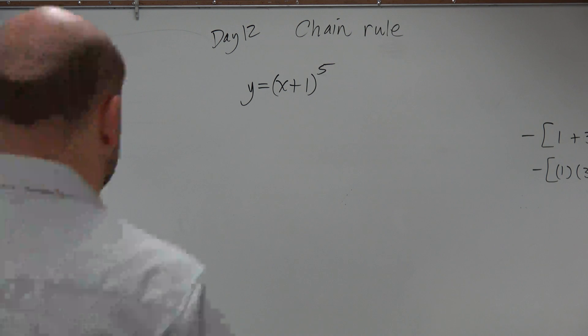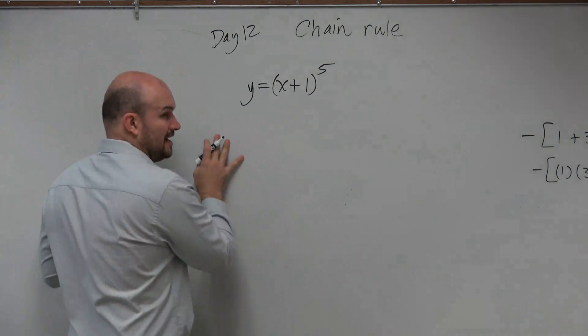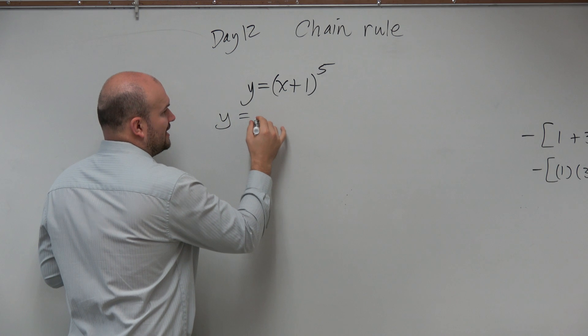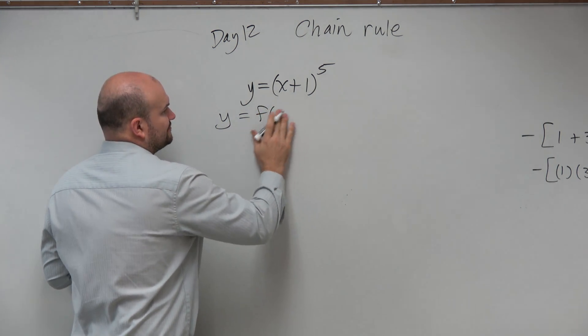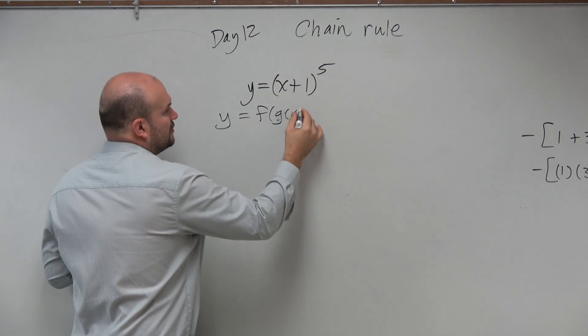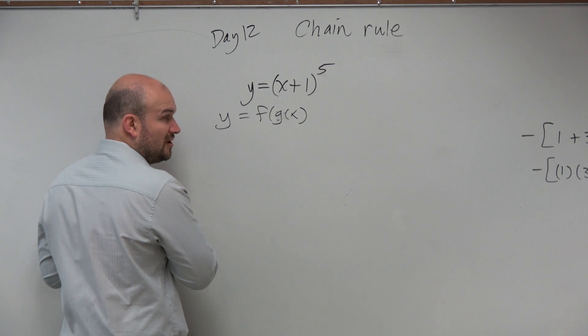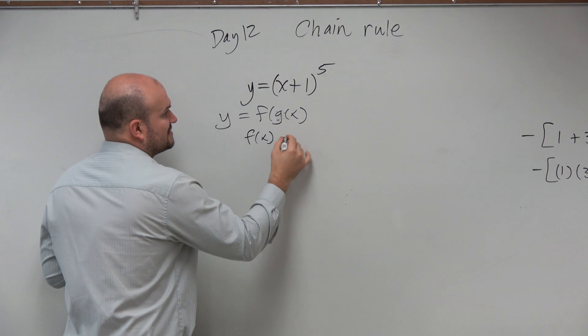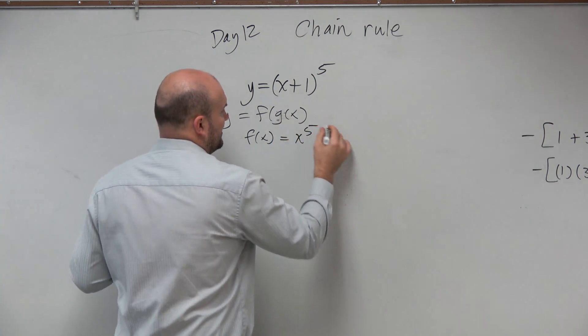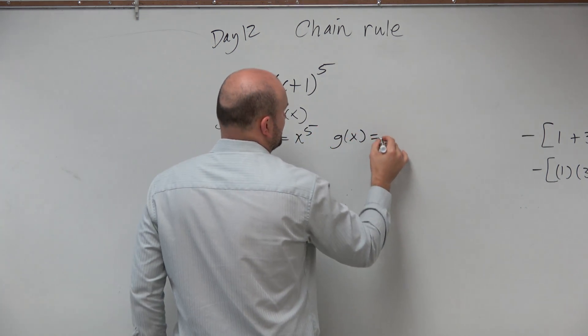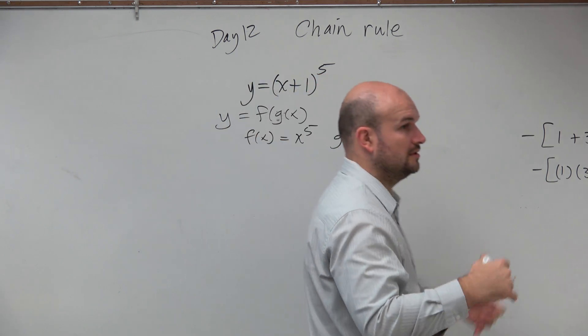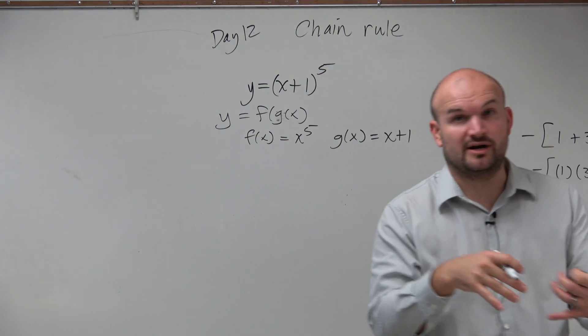Okay, so in this example we figured out that if we were going to write this as y equals f of g of x, then we could write this as f of x equals x to the fifth and g of x equals x plus one. So we found the parent and we found the child.